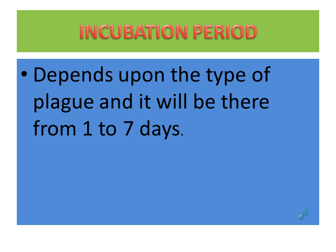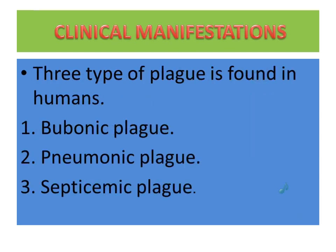Incubation period depends upon the type of plague; based on that it will be one to seven days. There are three types of plague found in humans: bubonic plague, pneumonic plague, and septicemic plague.